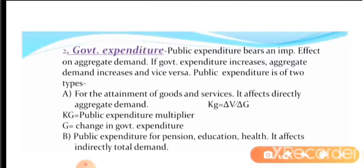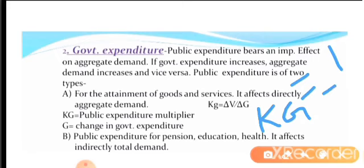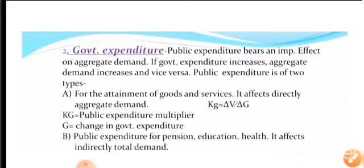When public expenditure increases, national income increases. The government expenditure multiplier formula is: Kg = 1 divided by 1 minus c. There is a direct relation between the public expenditure multiplier and the propensity to consume.